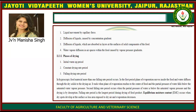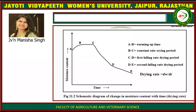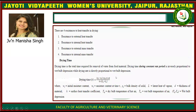The falling rate period is the longest period during drying of food products. Equilibrium moisture content occurs when dry spots develop at the surface, so less area is exposed to dry air and evaporation decreases. The diagram shows the change in moisture content with time: moisture content is on the Y-axis and time on the X-axis. AB is the warming-up period, BC is the constant drying period, CD is the first falling rate drying period, and DE is the second falling rate drying period. The drying rate is expressed as dW/dT. There are four resistances to heat transfer in drying: resistance to external heat transfer, resistance to internal heat transfer, resistance to external mass transfer, and resistance to internal mass transfer.